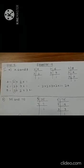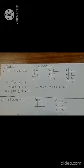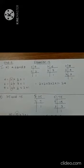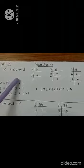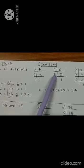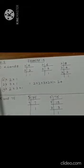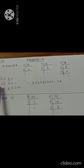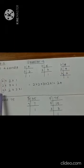Now we go to Exercise 5. Find the LCM of each set of numbers below using the prime factorization method. The numbers given are 4, 6, and 8. The first step is to find the prime factorization of each number. Factors of 4 are 2 × 2 × 1. Factors of 6 are 2 × 3 × 1. Factors of 8 are 2 × 2 × 2 × 1. We have written all the factors.